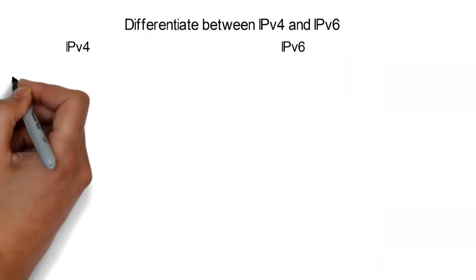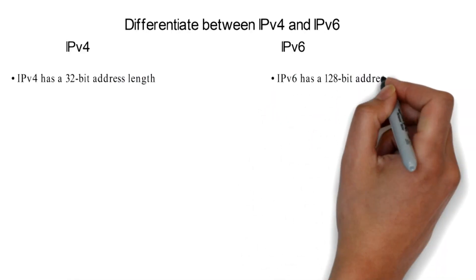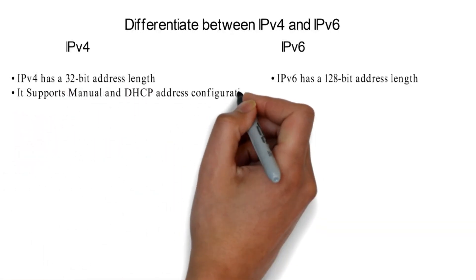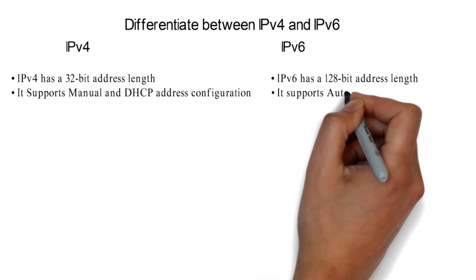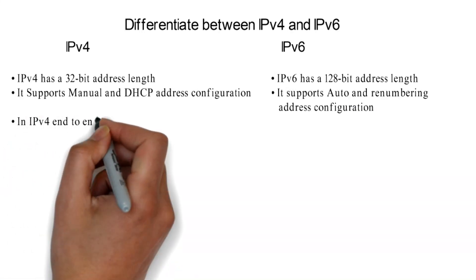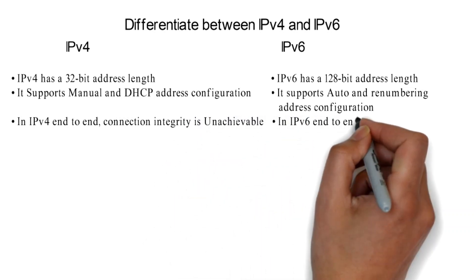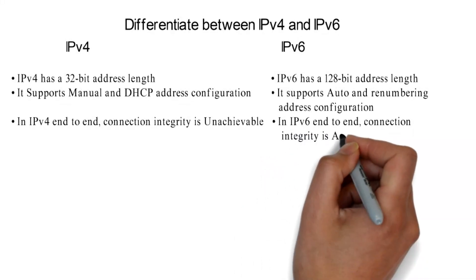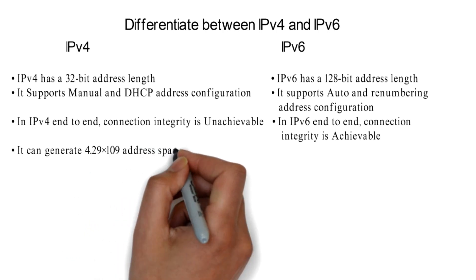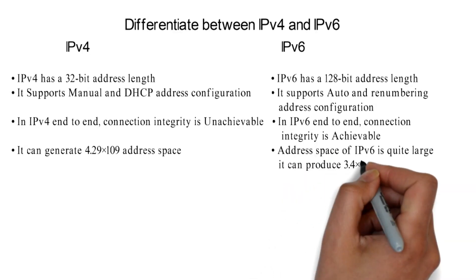Differentiate between IPv4 and IPv6. IPv4 has a 32-bit address length; IPv6 has a 128-bit address length. IPv4 supports manual and DHCP address configuration; IPv6 supports auto and renumbering address configuration. In IPv4, end-to-end connection integrity is unachievable; in IPv6, end-to-end connection integrity is achievable. IPv4 can generate 4.29 × 10⁹ address space; the address space of IPv6 is quite large — it can produce 3.4 × 10³⁸ address space.